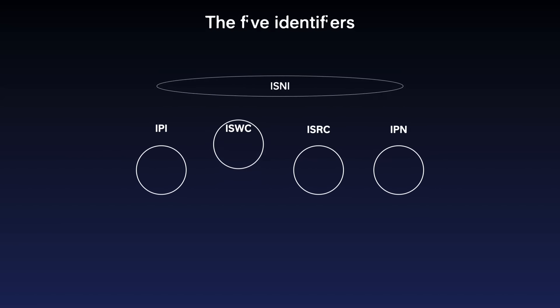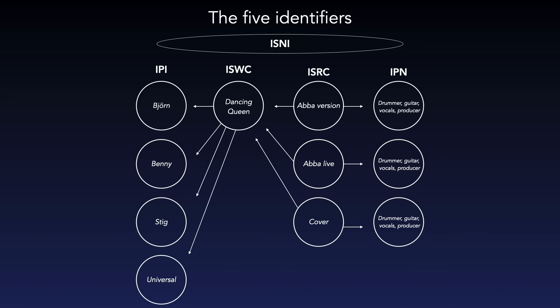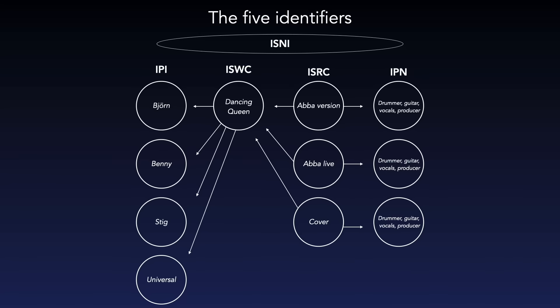When everything is in harmony, it should look like this. We have an example which is Dancing Queen, which Björn wrote together with two others — you might think it was one more, but it's actually two more. When everything is in order, this is how it should look: three songwriters and a publisher. Stig here was actually ABBA's manager, but his role here is as part of the songwriting — he's a songwriter on Dancing Queen, he wrote part of the lyrics.